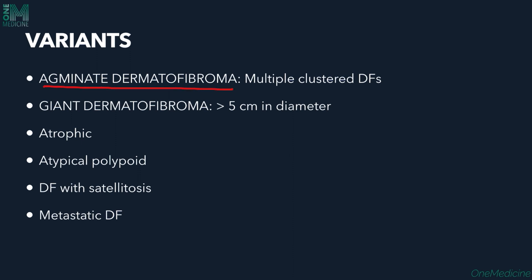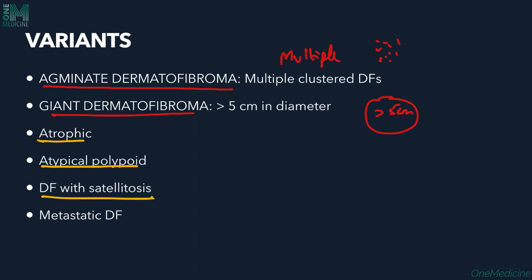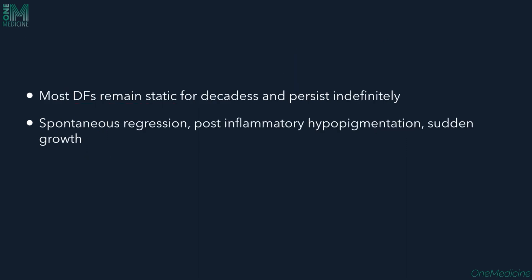There are several variants of dermatofibroma. The acne-made type involves multiple clustered dermatofibromas together. The giant dermatofibroma is a single lesion more than five centimeters in diameter. We also have the atrophic type, atypical polypoid type, and dermatofibroma with satellitosis, where one lesion is surrounded by many smaller ones. Metastatic dermatofibromas also exist.